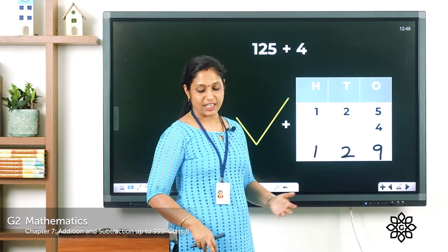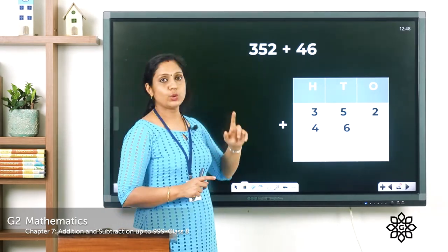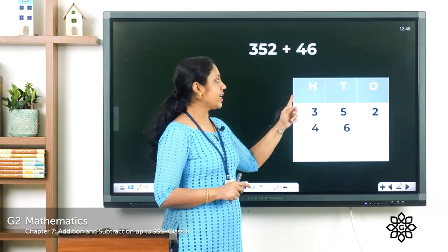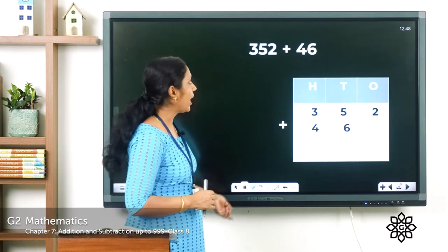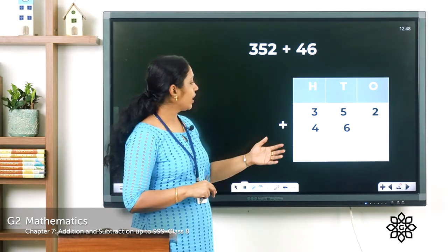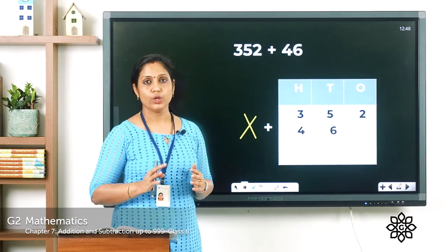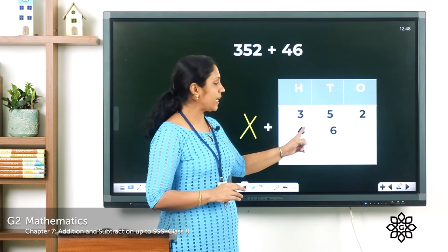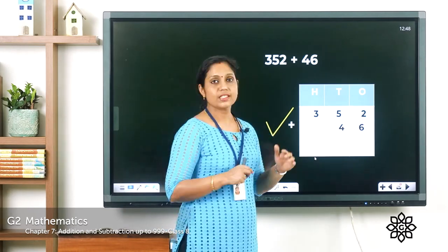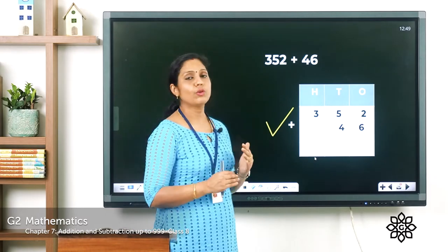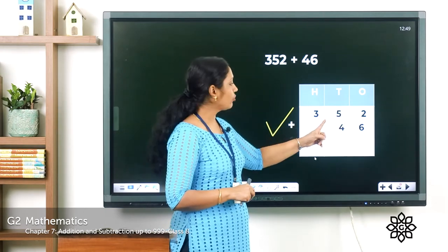Let's check more examples. We have 352 plus 46. 352 is a three-digit number with ones, tens, and hundreds. The second number 46 has ones and tens. If 46 is written incorrectly with 4 in the hundreds place and 6 in the tens place, that is wrong. Because 46 has 4 tens and 6 ones, so 4 should come under the tens place and 6 under the ones place. Only then will you get the correct answer for 352 plus 46.